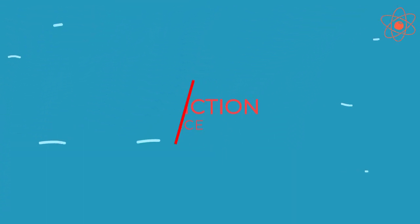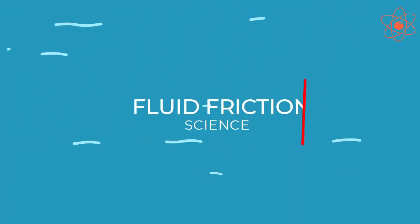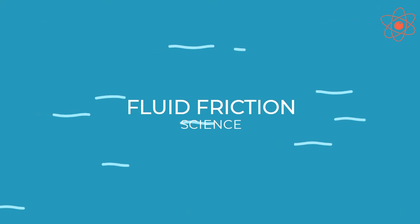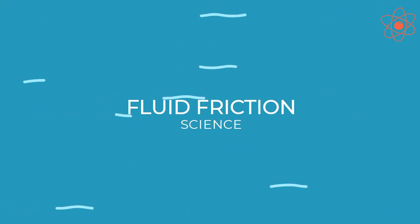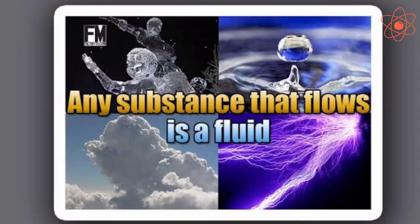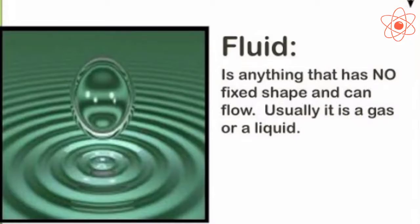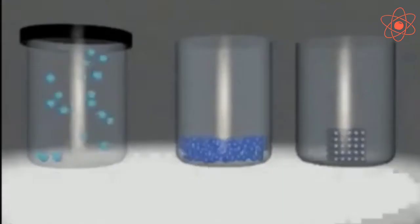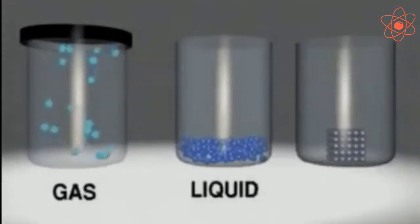Welcome back dear students, now we will learn about fluid friction. Before we describe fluid friction, we should know the meaning of the term fluid. Fluids are those substances which are able to flow easily; they have no fixed shape. That is why liquids and gases are fluids, as they can flow easily.